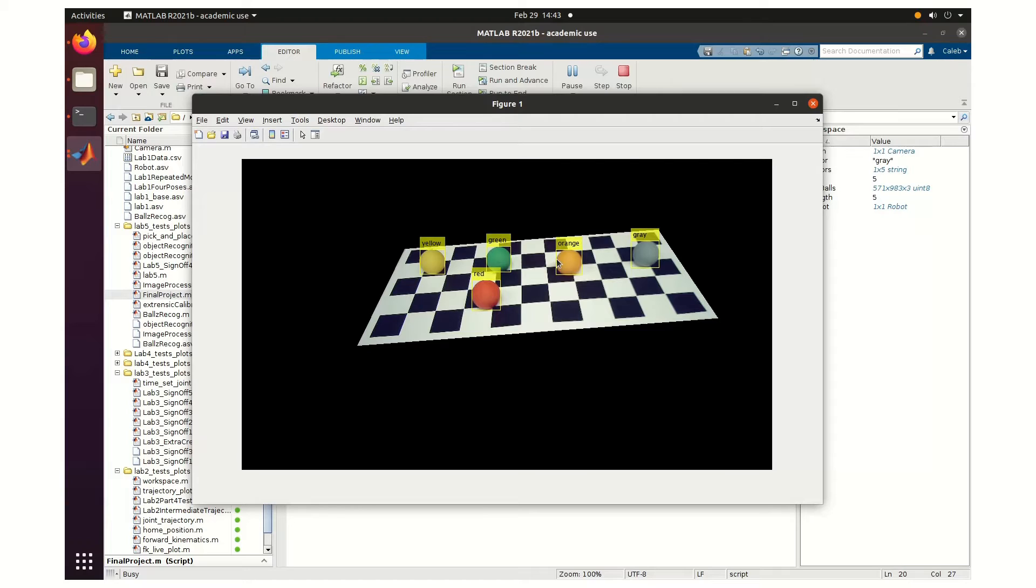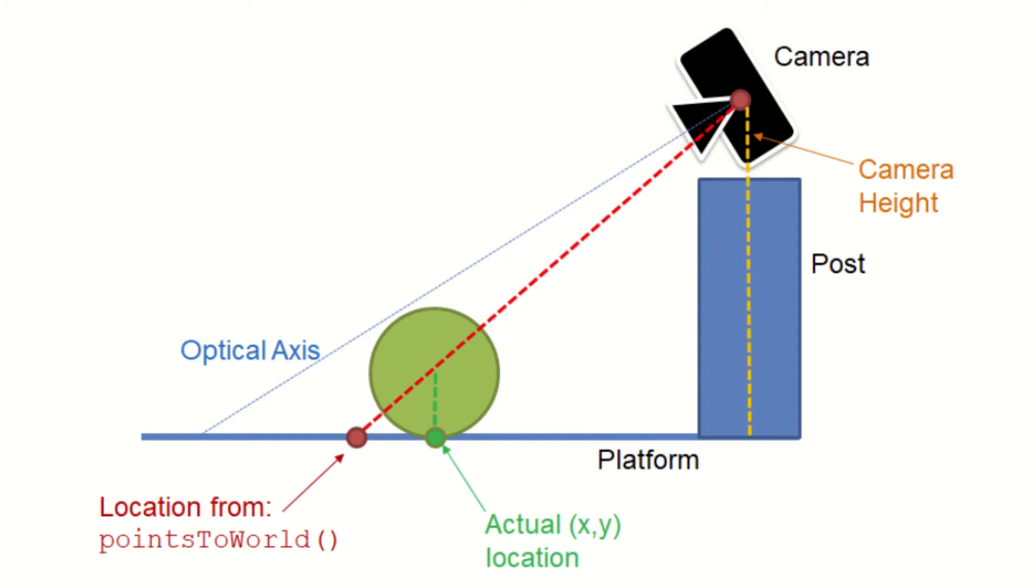Once we have these masks, we can identify the blobs of white pixels and output a centroid for where the ball is. However, due to the location of the camera, the robot will attempt to grab the ball in front of its actual location. So using some geometry of the workspace, we can create an offset depending on the location of the ball to increase the precision and accuracy of the robot.